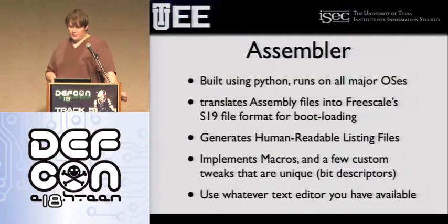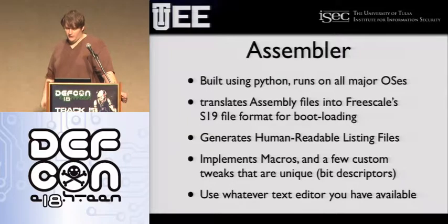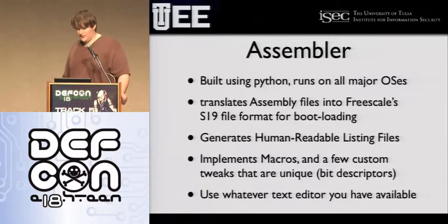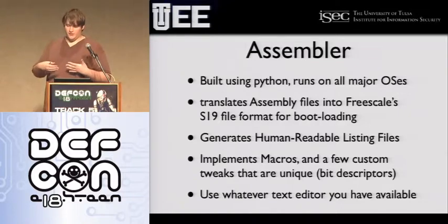The assembler we've written is written in Python and you can download it off the website — it's on the conference CD. You just run the Python file with an ASM file containing assembly instructions and it generates the S19 binary that you upload to the board. The assembler also spits out a listing file, which is the assembled binary right next to the code so you can see what it looks like.